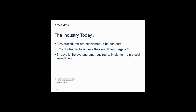Another study has shown 37% of sites do not meet their enrollment targets, and 11% of sites do not enroll a single subject at all. Lastly, 18% of all amendments are completely avoidable — and this is important because each amendment costs approximately $450,000 and requires 61 days to implement on average.